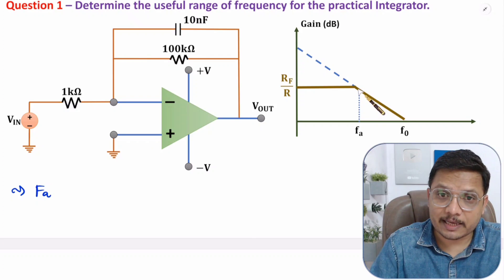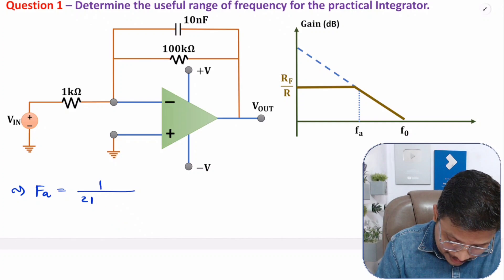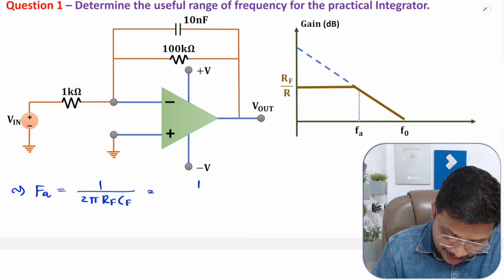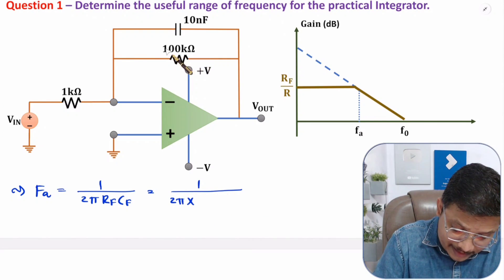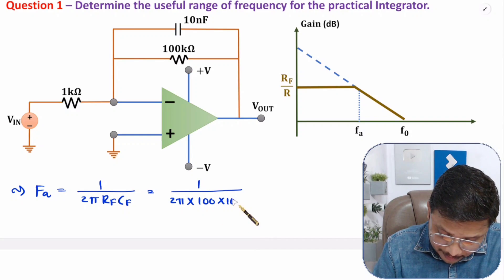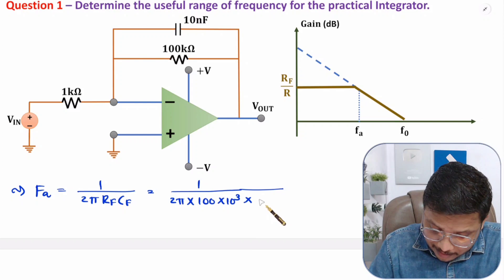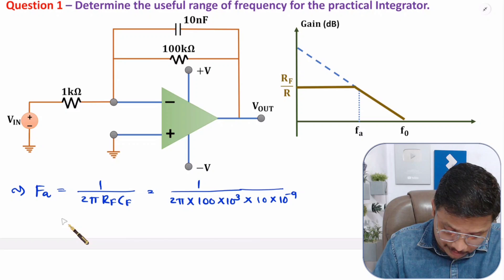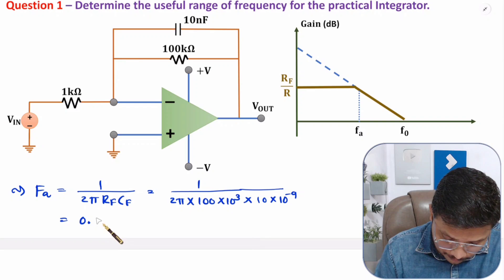Fa is the cutoff frequency, so Fa = 1/(2π·Rf·Cf). Let us substitute the values. Rf is 100 kilo-ohm, so 100 × 10³, and Cf is 10 nanofarad, so 10 × 10⁻⁹. Solving this in a calculator gives Fa = 0.1591 kilohertz.